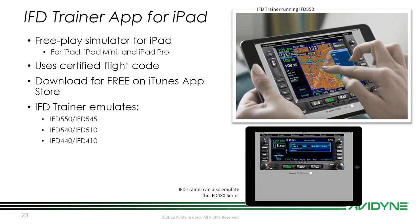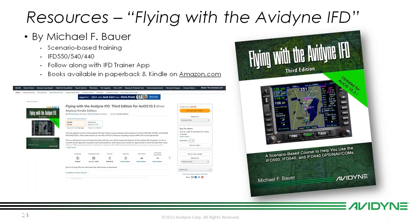Let's talk about resources. If you don't have IFD Trainer, it's a free iPad download using the certified flight code. It emulates all six versions of the IFD: the 550, 545, 540, 510, 440, and 410. In GA you'll primarily see the 550, 540, and 440. The Michael Bauer book — third edition — is available on Amazon in Kindle and paperback. It's updated for AVIOS 10.3 with scenario-based training that follows along with the IFD Trainer app.